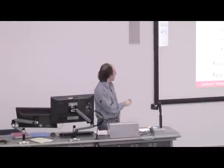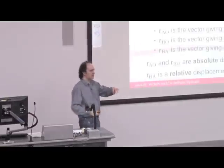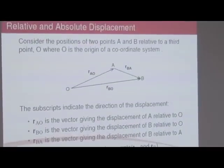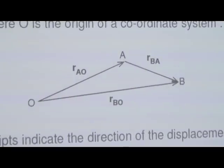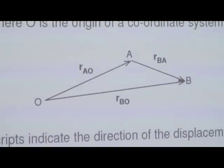If we assume that 0 is some point on the Earth's surface — a fixed point — then R A-0 and R B-0 will define exactly, relative to that point, where point A and point B are. Because we know where 0 is, we know where A and B are from those vectors. But the vector connecting A and B together is what's known as a relative vector. So if we move point 0 to another location, R B-A will be the same — that's a relative displacement — whereas R A-0 and R B-0 will change.